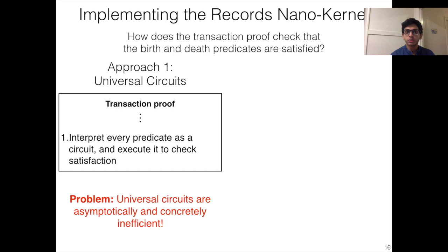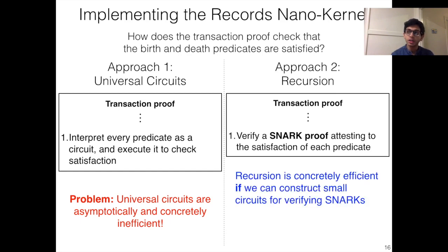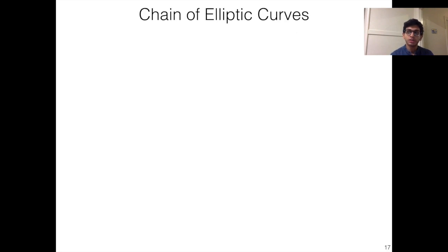So because of this, in Zexy, we take an alternate approach, and that is to use proof recursion. The idea here is that the transaction proof, instead of directly verifying the predicate circuit, it will instead verify a proof that attests to the satisfaction of this predicate circuit. And the nice property of this is that recursion is concretely efficient if we can construct small circuits that verify these SNARK proofs. Now, the problem is that constructing these efficient SNARK verification circuits requires special pairing-friendly elliptic curves. Okay, so to resolve this problem, what we do in Zexy is construct special chains of elliptic curves which are amenable to recursion.